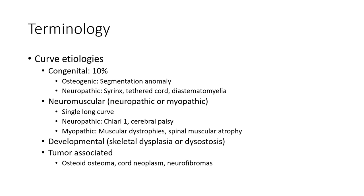Neuropathic causes include diastematomyelia. Neuromuscular types show a single long curve. Neuropathic: cerebral palsy. Muscular: spinal muscular atrophy. Developmental: spondyloepiphyseal dysplasia, osteodystrophy. Neurofibromatosis is also listed as a neuropathic cause.